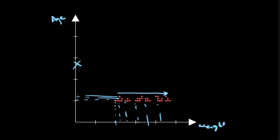Also, the weight is the dimension which has the highest amount of variance. To generalize, we can say that the direction or the dimension with the highest amount of variance is the dimension with the highest amount of information.